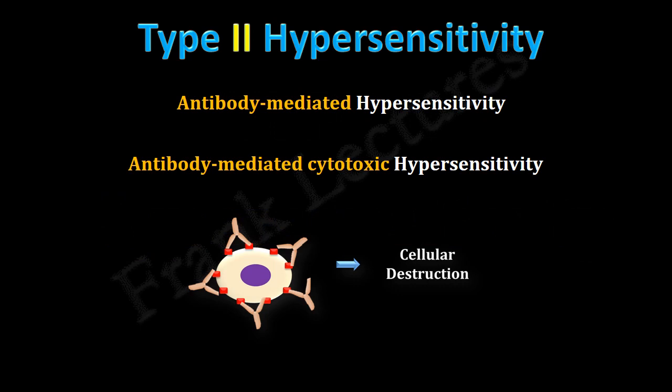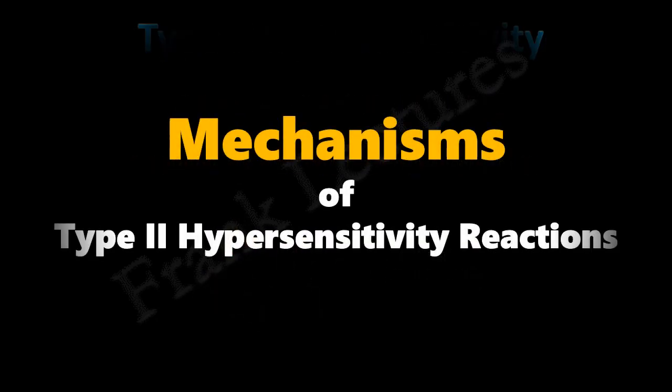In the previous video lecture we understood that type 2 hypersensitivity reactions are antibody-mediated cytotoxic reactions. In these reactions, antibodies bind to the antigens present on cell surfaces and cellular destruction results in host tissue damage. Today we will understand the mechanisms of type 2 hypersensitivity reactions.